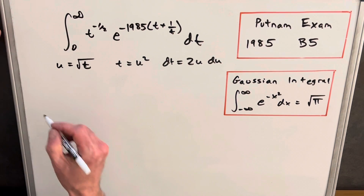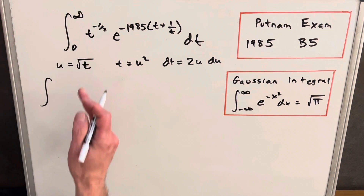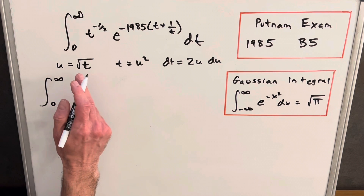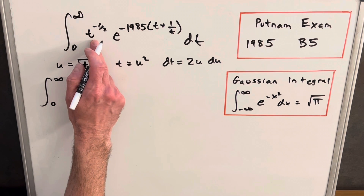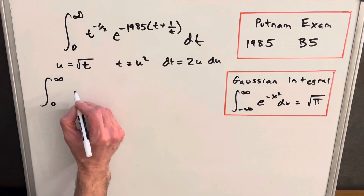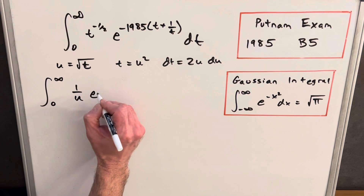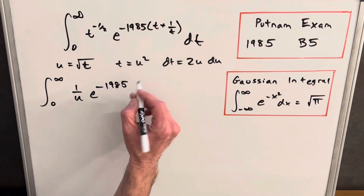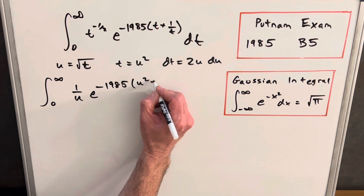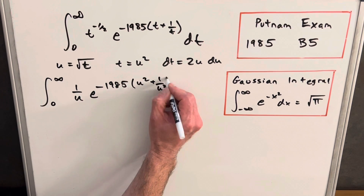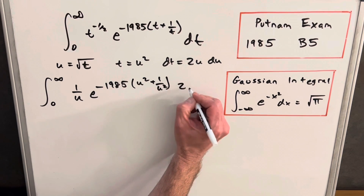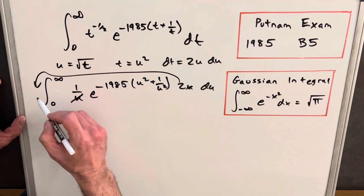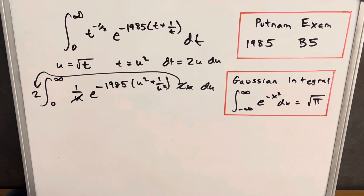Let's make the substitution and update our bounds: the square root of infinity is still infinity, and the square root of 0 is just 0. Now t to the minus one-half becomes 1 over u, we have e to the minus 1985 times (u squared + 1/u squared), and then a 2u du out front. That's nice because the u's cancel and we can bring the 2 out front.